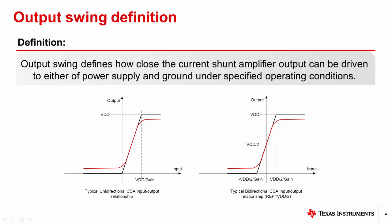Output swing defines how close the current sense amplifier output can be driven to either the power supply or ground under specified operating conditions. This relationship is easily demonstrated with an input output curve, shown for a unidirectional CSA and a bidirectional CSA. Ideally, the CSA output should only be limited by ground and the power supply. In between these extremes, the output should vary linearly with input. In other words, the entire range of ground to VS should be usable and linear. The black line shows this desired behavior.